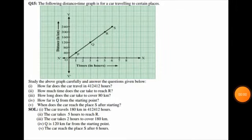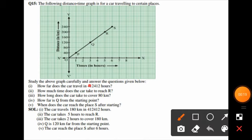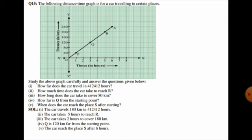Now see question number 15. Study the above graph carefully and answer the following questions. In part one, how far does the car travel in 4 and a half hours? The car travels 180 kilometers. In part two, how much time does the car take to reach point R? The car reaches point R after 5 hours.